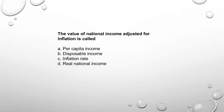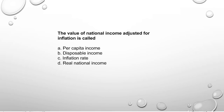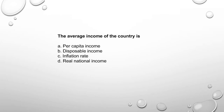Next: The value of national income adjusted for inflation is called real national income — option D. Next: The average income of the country is per capita income, calculated by dividing national income by population — option A.